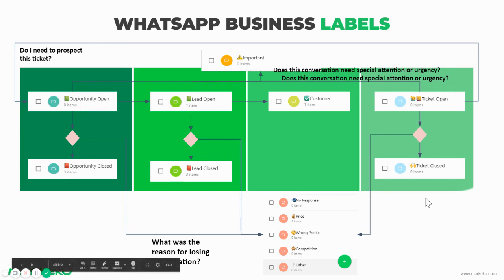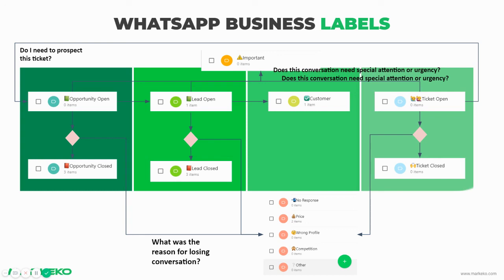This is overall how your process for managing your conversation workflow will look like — how the tags move as users move along the funnel — and what you can use to show your team, whether it's yourself or an actual team, how to use the funnel and the tags properly so that everybody is aligned and using the same process.